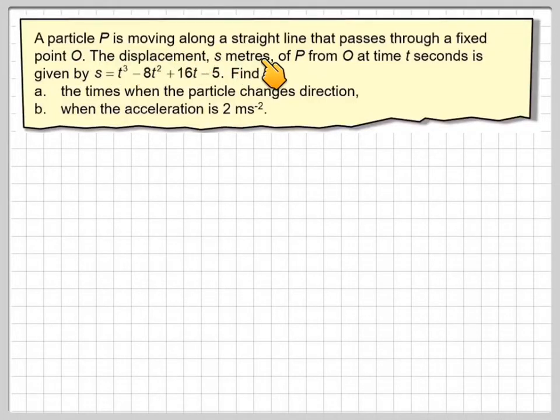A particle P is moving along a straight line that passes through a fixed point O. The displacement S meters of P from O at time t seconds is given by S equals t cubed minus 8t squared plus 16t minus 5. Find the times when the particle changes direction and when the acceleration is 2 meters per second squared.